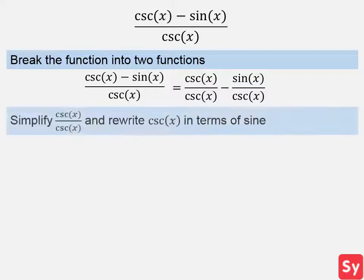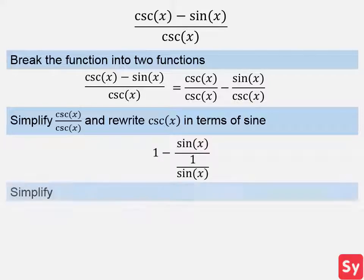Next, we simplify csc(x) over csc(x) and rewrite csc(x) in terms of sine. So csc(x) over csc(x) equals 1 and csc(x) equals 1 over sin(x). So we get this.